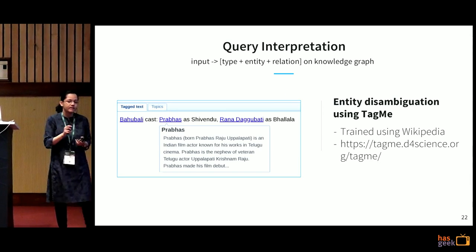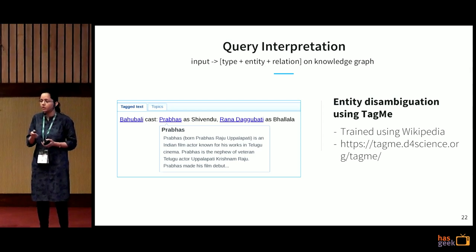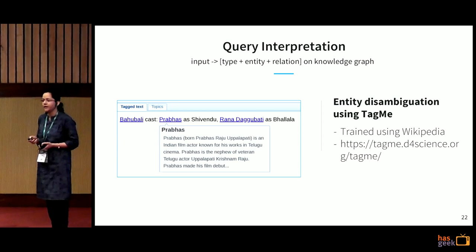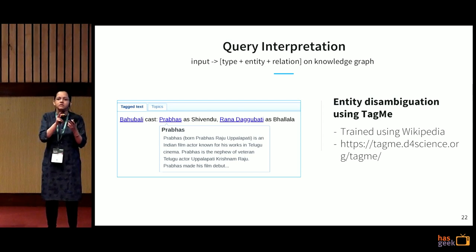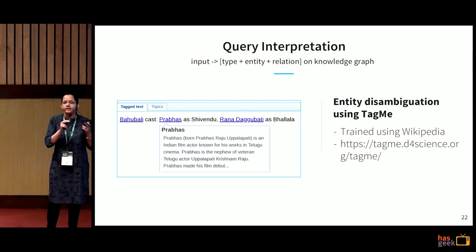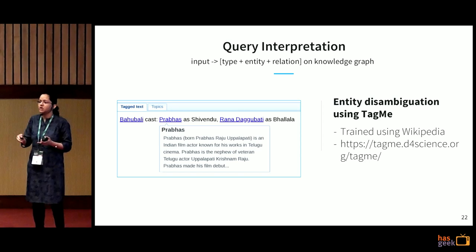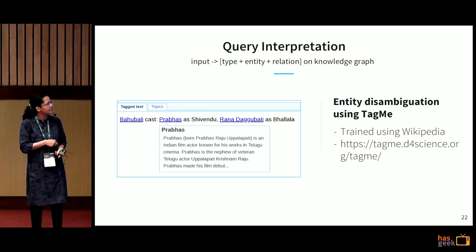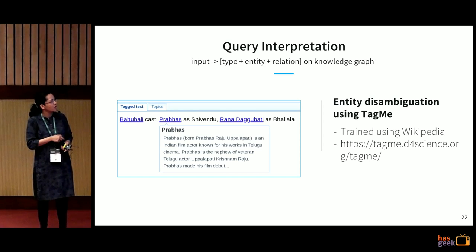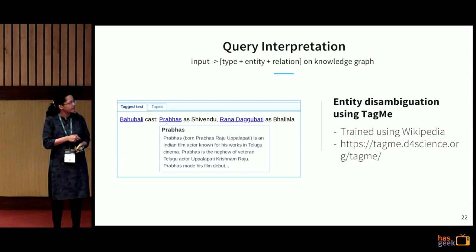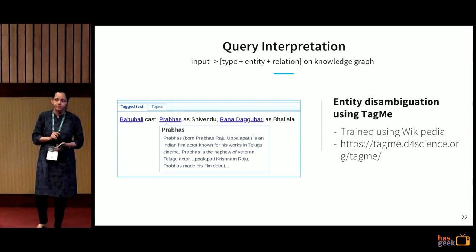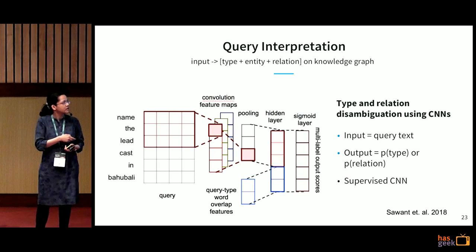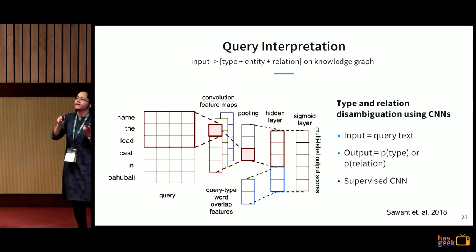We use an open source tool called TagMe, which is trained using Wikipedia — since Wikipedia already has words marked with their source entities, it uses that as training data and trains a machine-learned model. Given any input text, it identifies entities. For example, given the query 'Bahubali cast, Prabhas, Arshirindu,' it identifies that the word Prabhas is a link to the entity Prabhas. Using TagMe, we first identify the entities.